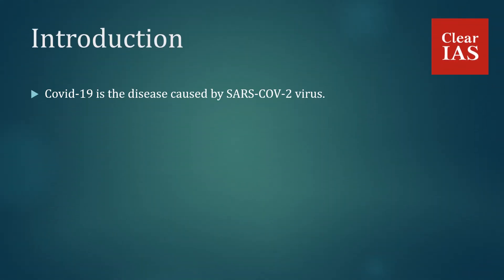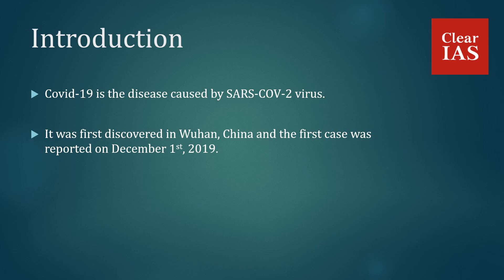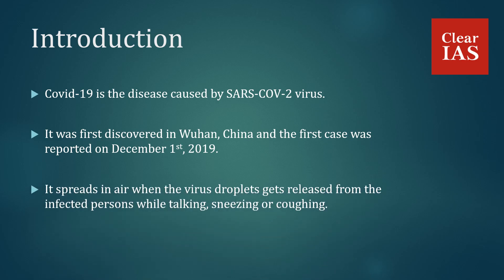Introduction. COVID-19 is the disease caused by SARS-CoV-2 virus, which stands for Severe Acute Respiratory Syndrome coronavirus 2. It was first discovered in Wuhan, China and the first case was reported on December 1, 2019. It spreads in air when virus droplets get released from infected persons while talking, sneezing or coughing. However, the source of transmission of this virus to humans still remains unclear.